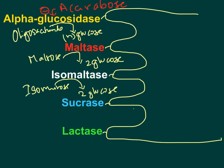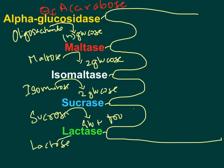Sucrase enzyme acts on sucrose and releases glucose plus fructose by breaking the alpha 1,2 bond present in sucrose. Lactase enzyme acts on lactose — the milk sugar — and breaks the beta 1,4 bond to release galactose plus glucose.